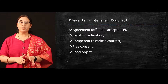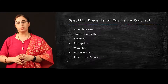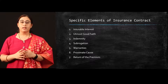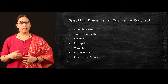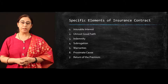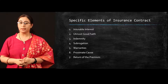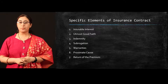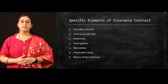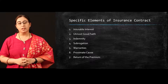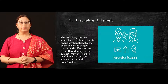Now look at the special elements which are specific to the insurance contract. Some of them are insurable interest, utmost good faith, indemnity which is specifically related to general insurance, subrogation, warranties, proximate cause, and return of the premium. Now we are going to look at all of these in detail.